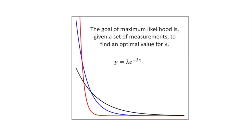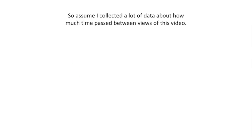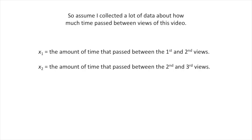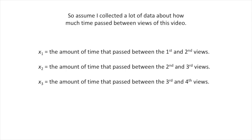The goal of maximum likelihood is, given a set of measurements, to find an optimal value for lambda. So assume I collected a lot of data about how much time passed between views of this video. x sub 1 equals the amount of time that passed between the first and second views. x sub 2 equals the amount of time that passed between the second and third views. x sub 3 equals the amount of time that passed between the third and fourth views, etc.